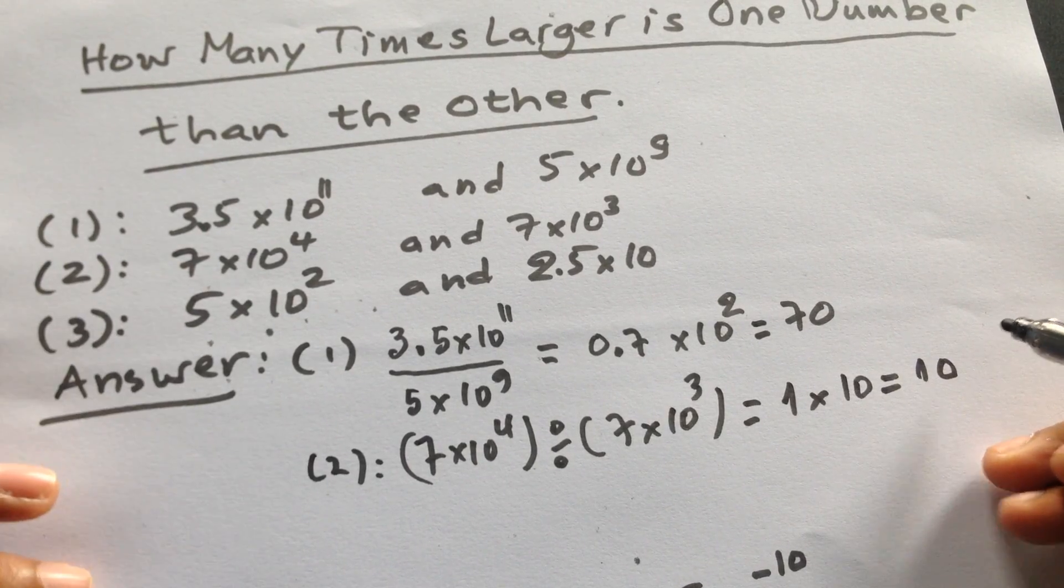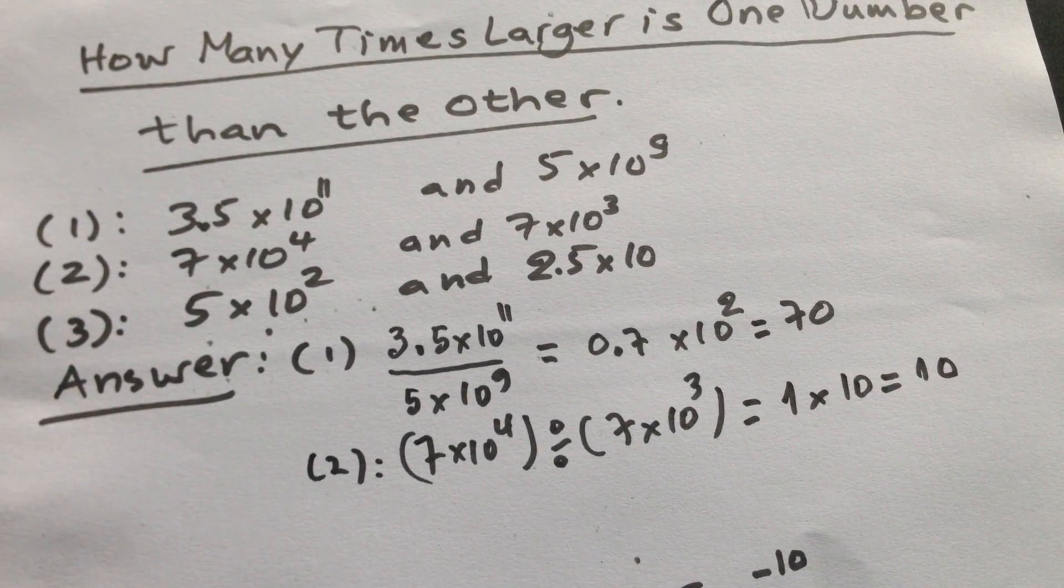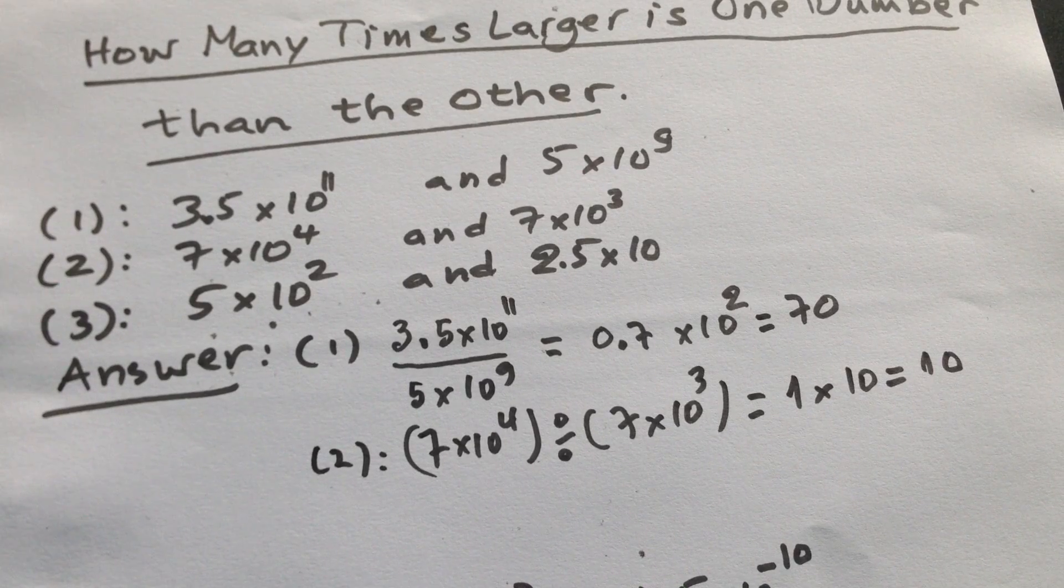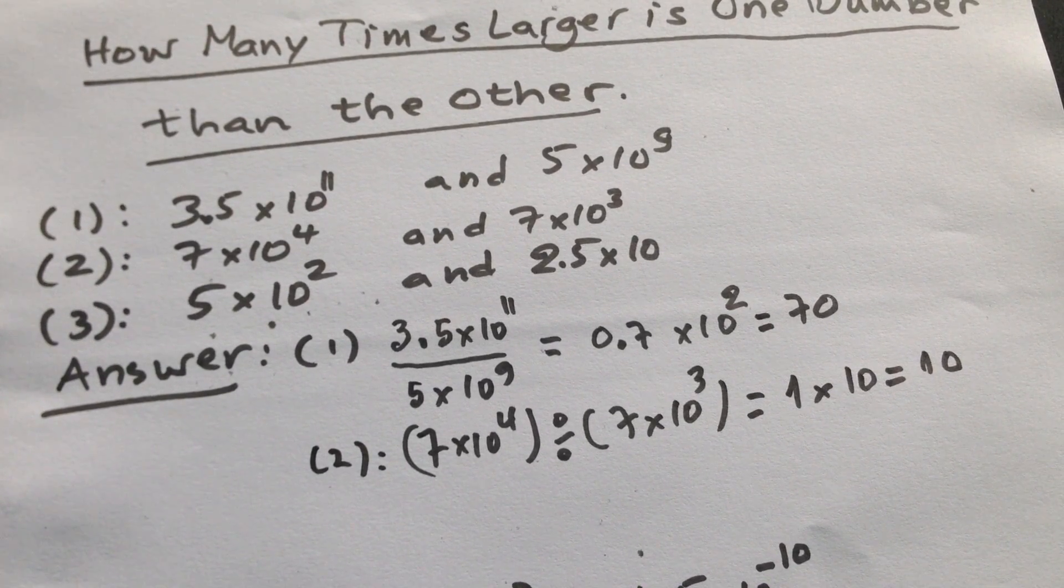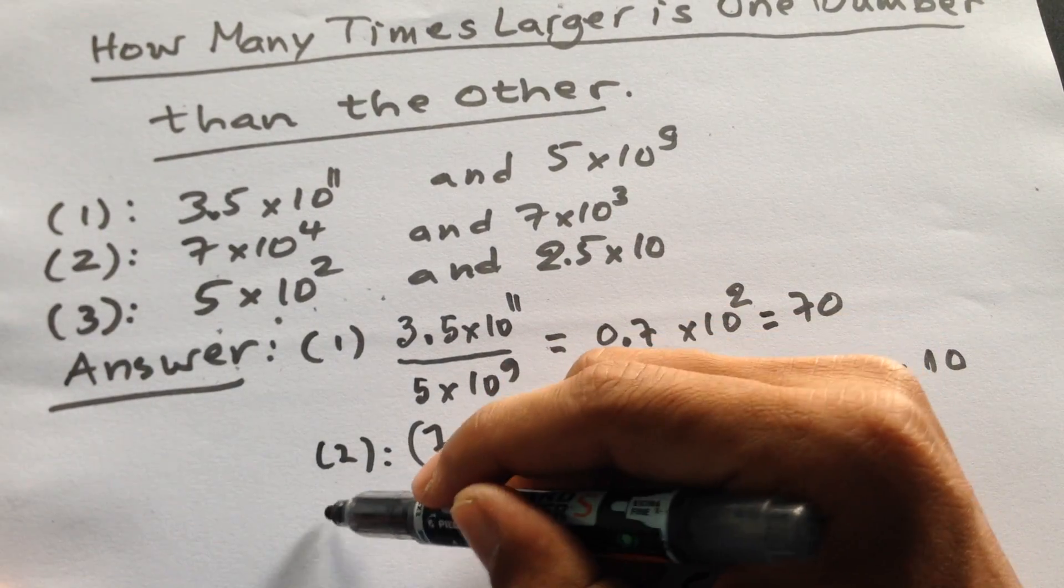So it will be 10. So it means that 7 times 10 to the power 4 is 10 times 10 to the power 3.